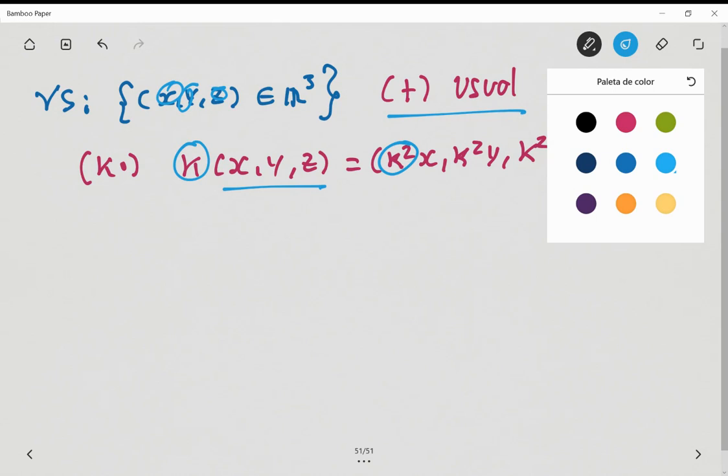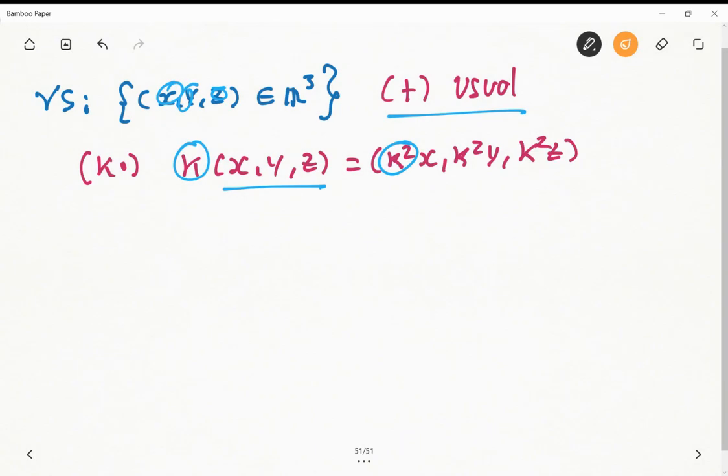So in this case we can find a contradiction with one of the axioms. Let's consider the 8th axiom, and what this 8th axiom says is that k plus m times the vector u should be equals to ku plus mu.